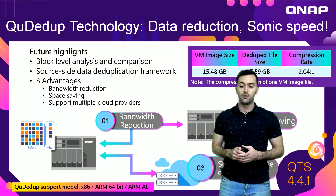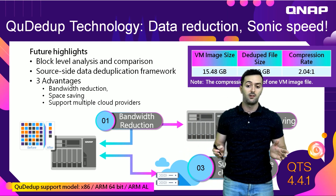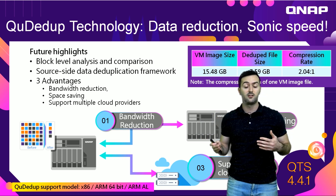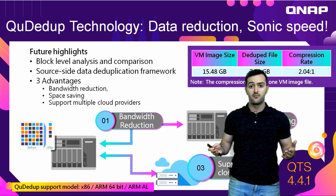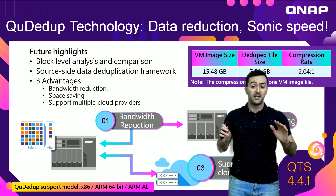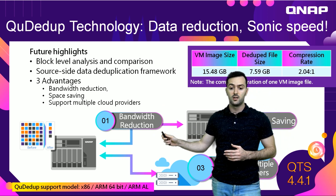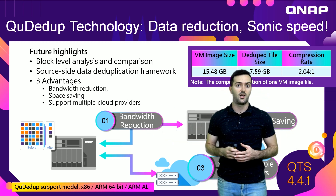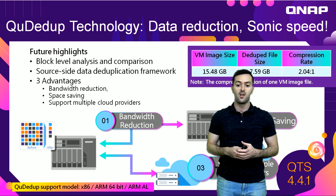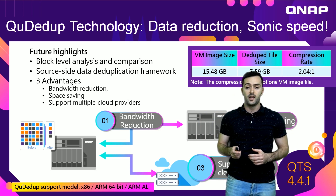Looking at the Qtdupe technology highlights: it performs block-level analysis and comparison, and it is a source-side data deduplication framework. QNAP is the first NAS vendor to support source-side data deduplication. It has three main advantages: bandwidth reduction, space saving, and block-level data transfer for backup and restore — and it also supports multiple cloud providers.